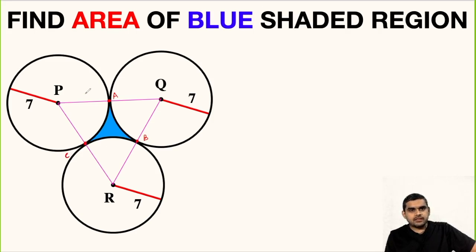P to A, this is the radius, so this is 7 units. A to Q is also 7 units. Q to B is 7 units, likewise R to B is 7 units, R to C is 7 units, and P to C is 7 units.